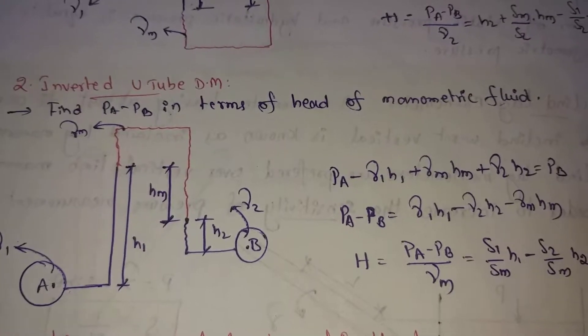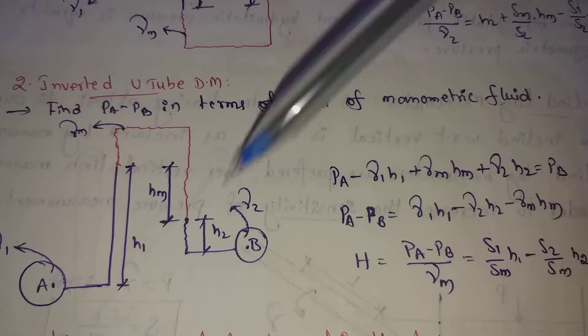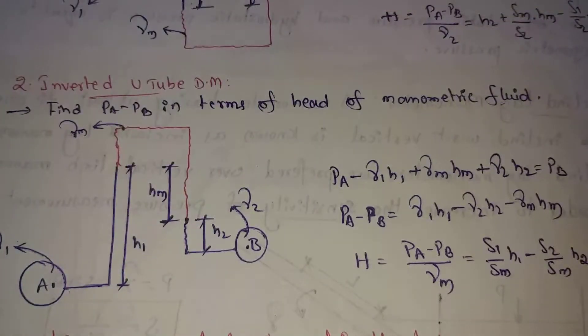So PA minus PB equals gamma1 h1 minus gamma2 h2 minus gamma_m hm. So this formula is used to see inverted U-tube differential manometers. So for low pressures in the two pipes, there are a lot of low pressures that we find out. So this is inverted U-tube differential manometer.